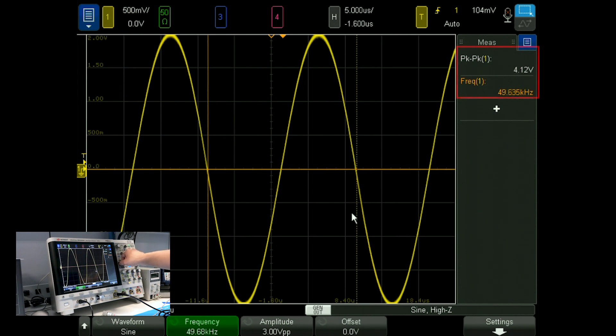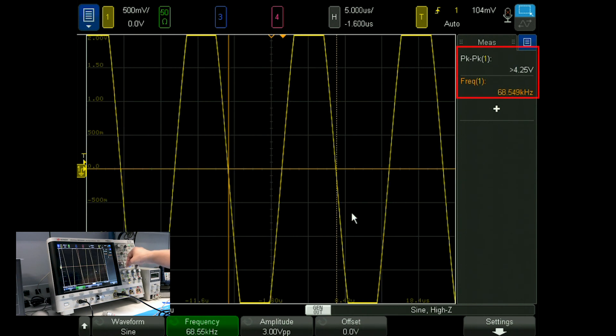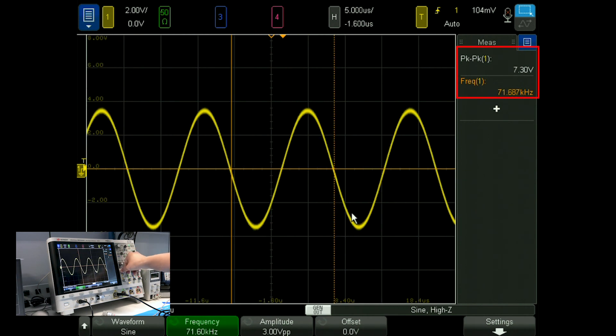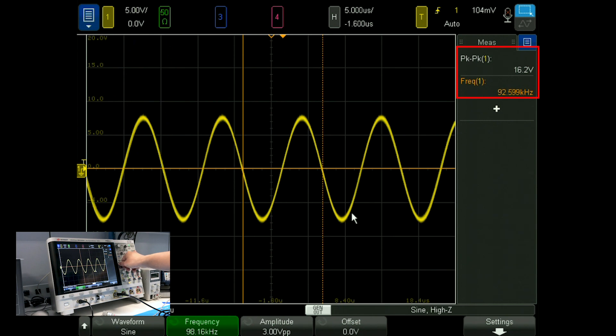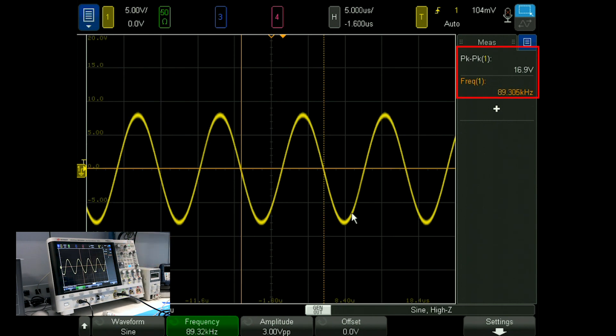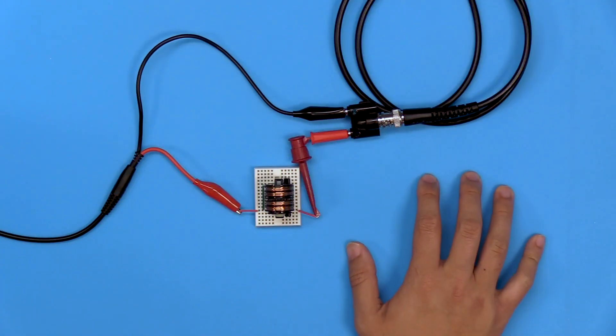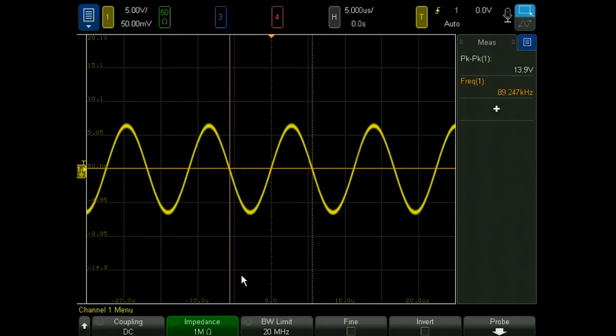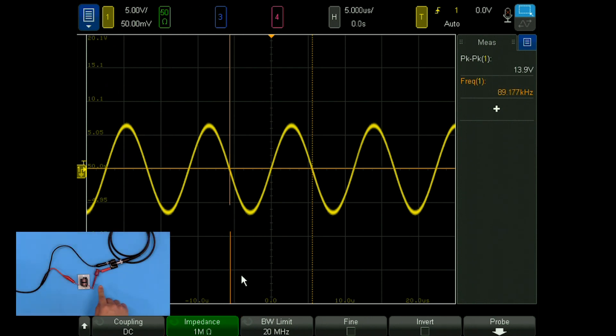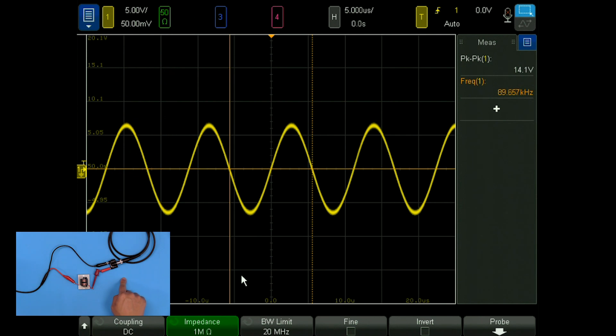Everything is still looking good, but now the voltage is increasing again to levels even higher than before at 16.9 volts. What is going on now? The input impedance is set to 1 mega ohm and is large enough to still cause reflections back onto the circuit. Let's set this input to a 50 ohm impedance.